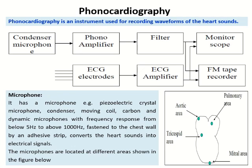Regarding the microphone component: it converts sound energy into electrical energy. The types of microphones used include piezoelectric crystal microphones, condenser type, moving coil, carbon, and dynamic microphones, with a frequency response in the range of 5 Hz to 1000 Hz. The microphones are properly located in specific areas of the heart. There are four auscultation areas: the pulmonary area for pulmonary valves, the aortic area for aortic valves, the tricuspid area for tricuspid valves, and the mitral valve area for mitral valves.